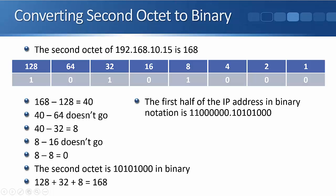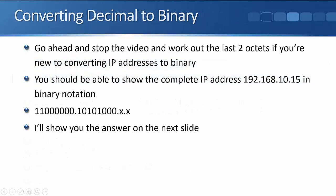So the first half of our IP address in dotted decimal is 192.168. In binary, it's 11000000.10101000. Hopefully you followed along with that okay.